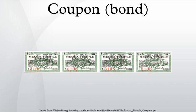For example, if a bond has a face value of $1,000 and a coupon rate of 5%, then it pays total coupons of $50 per year. For the typical bond, this will consist of semi-annual payments of $25 each.